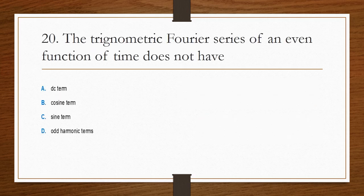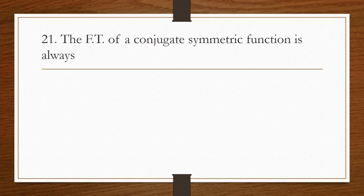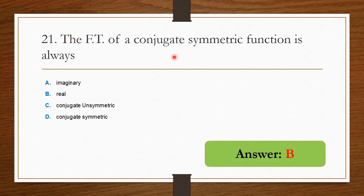The trigonometric Fourier series of an even function of time does not have a sine term, so option C is the right answer. The Fourier transform of a conjugate symmetric function is always real valued, so option B is the right answer.